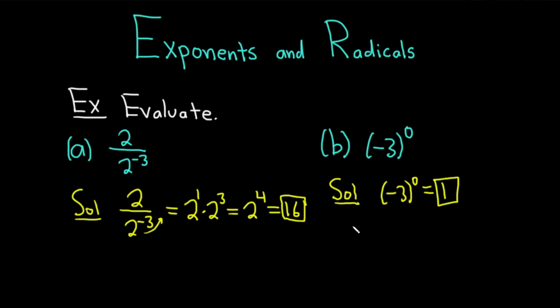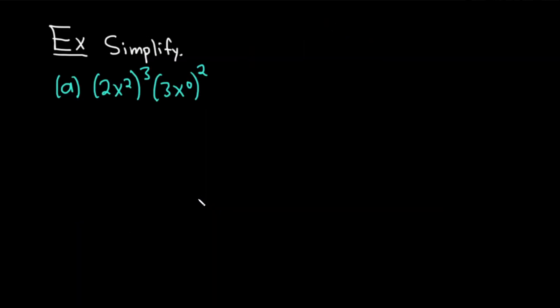but now let's start involving some variables. In this example, we are going to simplify. Part a, we have 2x squared, all being raised to the 3rd power, times 3 times x to the 0, and that's all being raised to the 2nd power. Let's work through it. Solution.